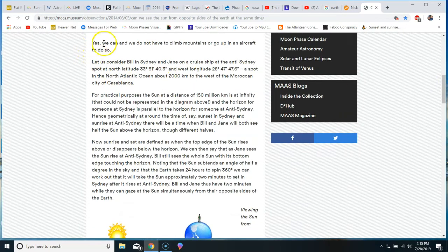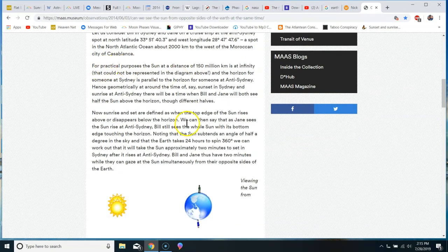Nick says, yes, we can and we do not even have to climb mountains or go up in an aircraft to do so. And then he tells a story about Bill and Sydney and Jane on a cruise ship at the Anti-Sydney, the Antipode of Sydney. And he goes into, you can, I'll leave a link so you can read the whole thing. Now, this is important. He is talking geometrically here, geometrically. But around the time of sunset in Sydney and sunrise at Anti-Sydney, there will be a time when Bill and Jane will both see half of the sun above the horizon, though different halves.